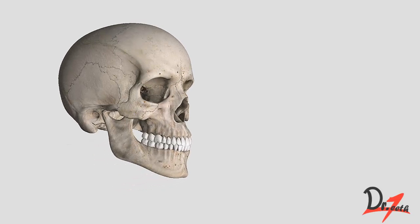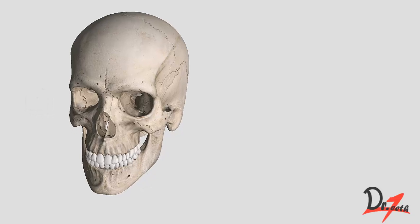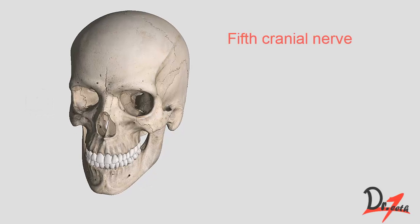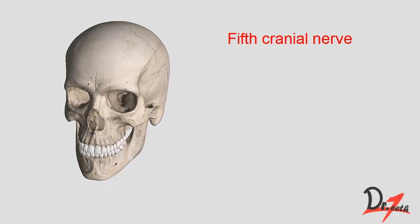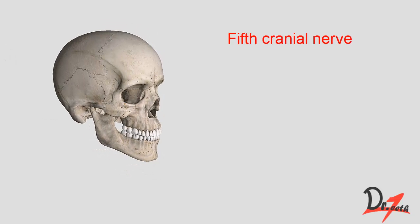Before we dive deep into trigeminal neuralgia, let us first study a little more about the trigeminal nerve to revise our concepts. The trigeminal nerve is the fifth cranial nerve. It is called trigeminal because it consists of three divisions: the ophthalmic nerve, which is the nerve of the orbit; the maxillary nerve, which is the nerve of the pterygopalatine fossa; and the mandibular nerve, which is the nerve of the infratemporal fossa.